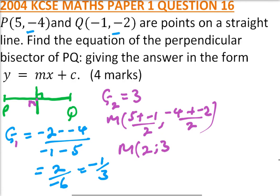Now we have the gradient of this other line and we have one point, so we can get the equation. We say (y - (-3))/(x - 2) should be equal to 3.